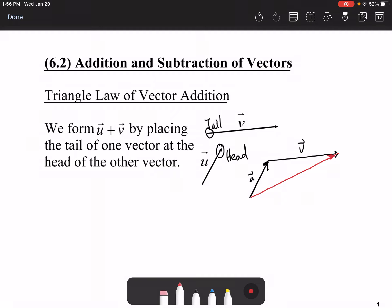U plus V turns out to be this new vector that we created here, which is called a resultant. A resultant vector is always the addition of two other vectors. That's how we draw it using the triangle law.